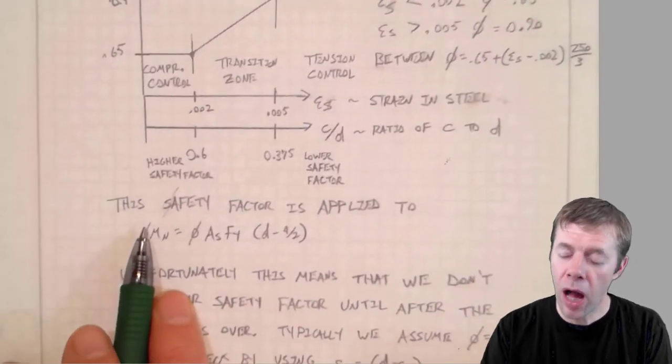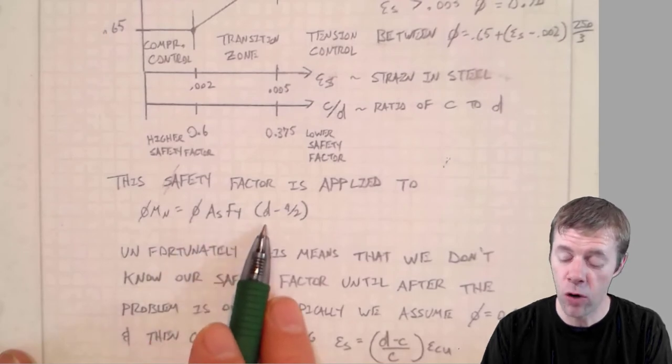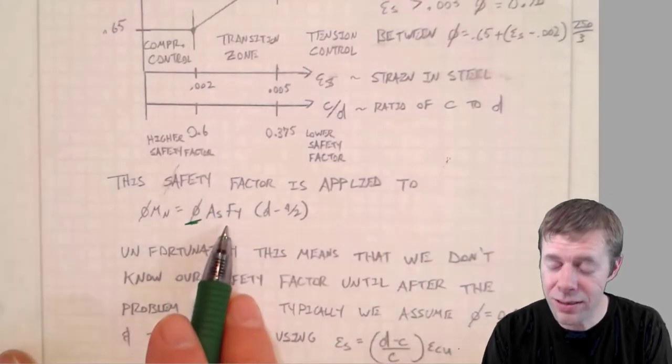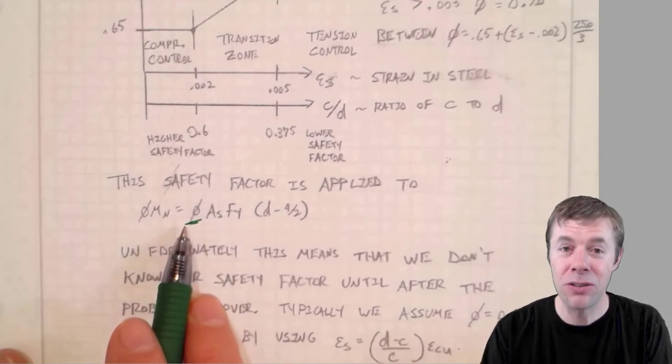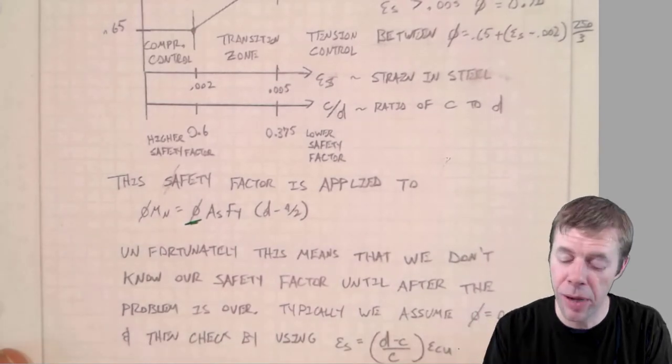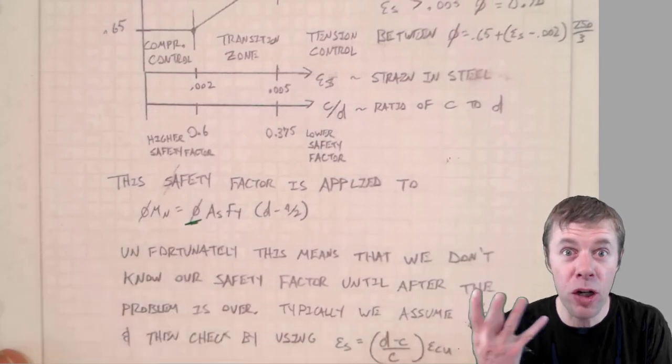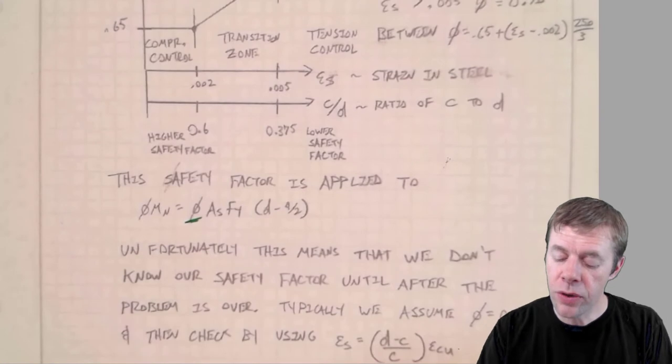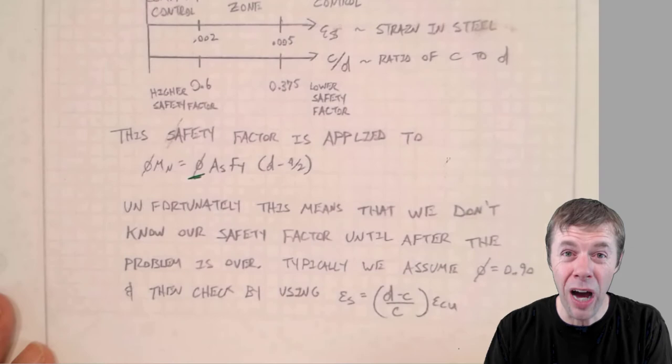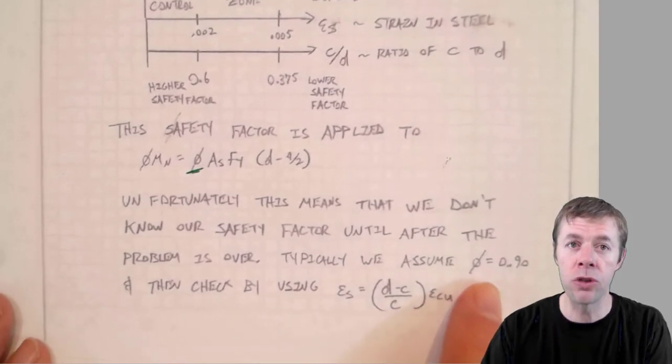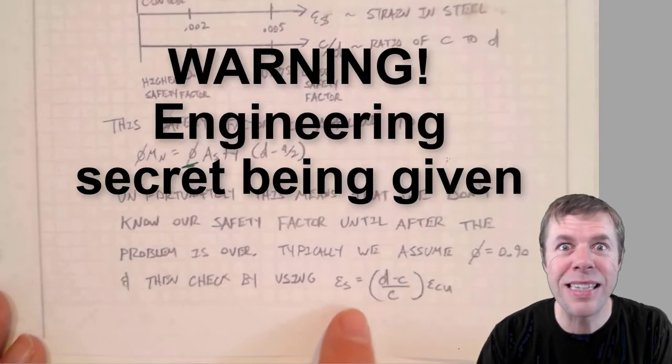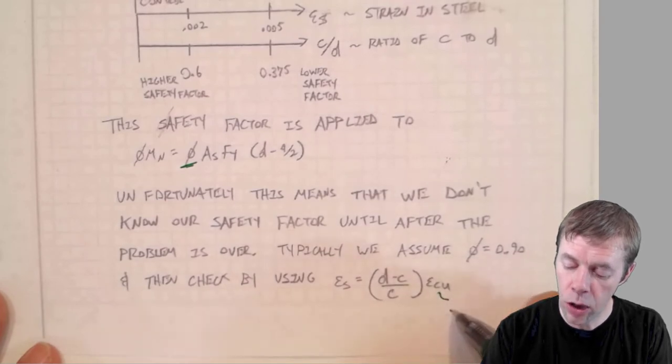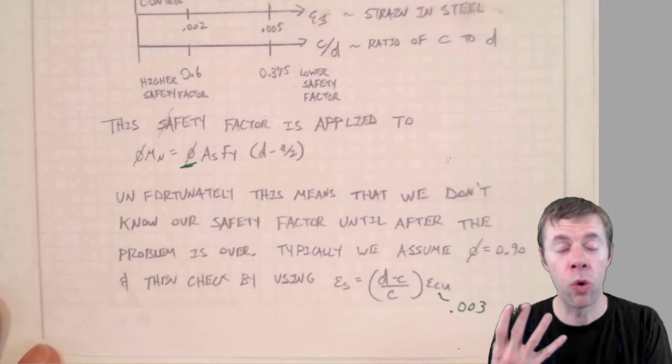And this safety factor is applied to the flexure equation A_S F_Y times D minus A over 2, the most important equation of flexural design. And this safety factor fee goes right here. So it decreases your capacity. So the higher the safety factor in numerical value, it means it's actually not having as big an impact on your capacity. And the lower your fee factor is in numerical value, the bigger impact it's having on your capacity. Because remember, it's less than 1. Unfortunately, this means that we don't know our safety factor in our designs until we're done. That's okay, though, we're going to assume a fee of 0.90 and then we'll just check it by using this. This is the secret to finding out what your strain in your steel is. It's just D minus C divided by C. And this value is 0.003. And this will become much more apparent when we work an example problem.